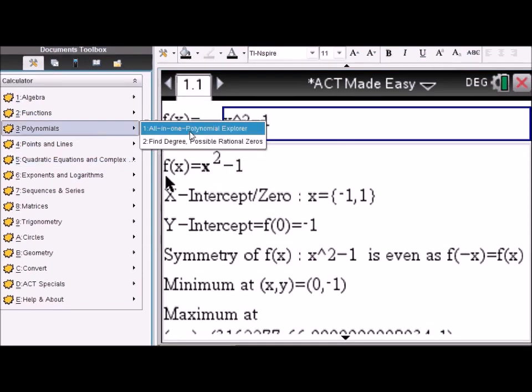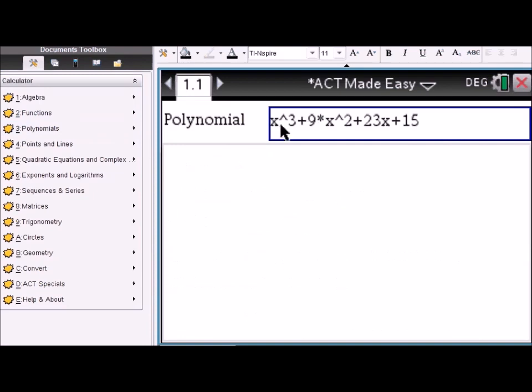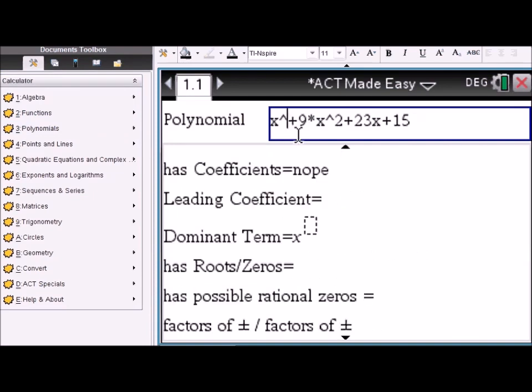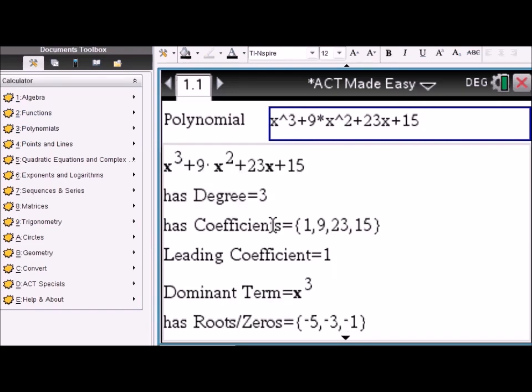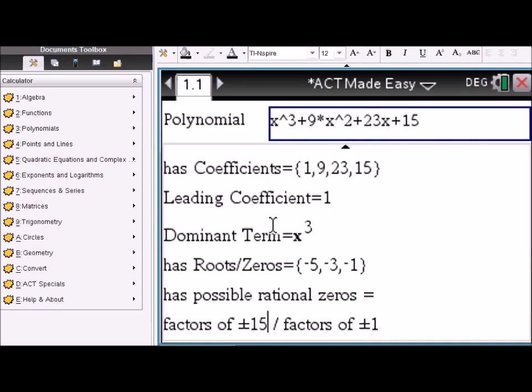Next, polynomials. All-in-one polynomial explorer. Enter a polynomial and then scroll up. See the degree of the polynomial, the coefficients, leading coefficient, dominant term, the zeros, and also the possible rational zeros.